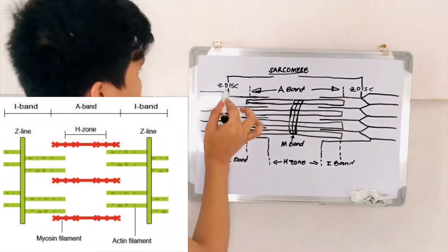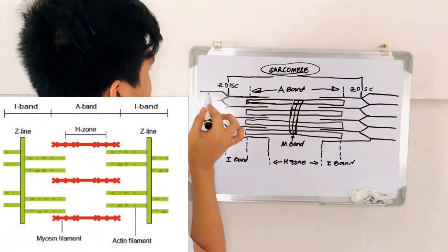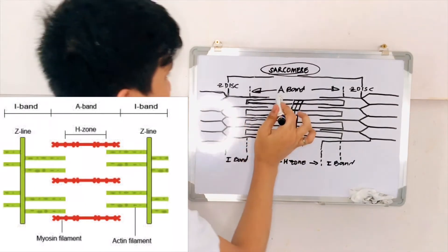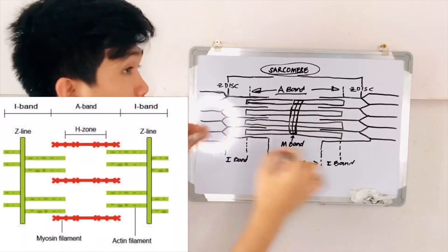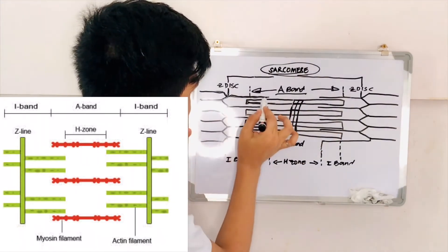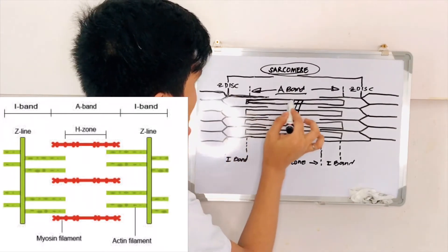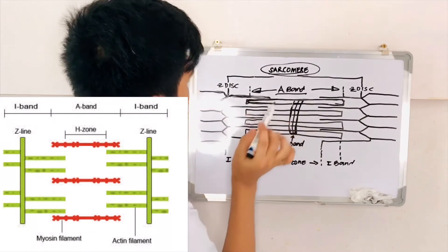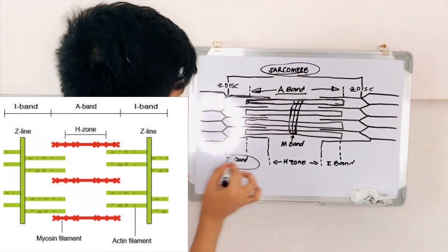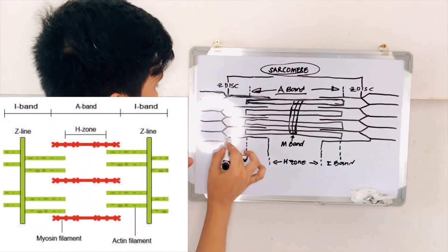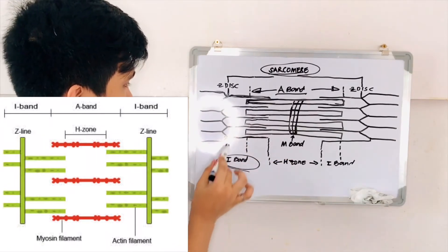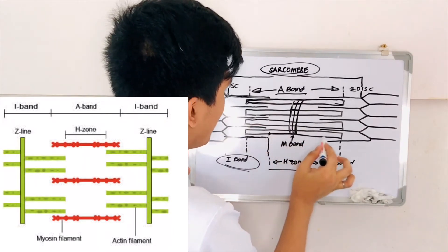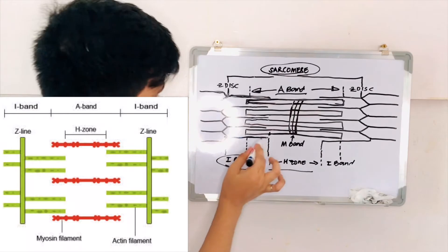When we say Z-disc, it's the boundaries of the sarcomere that links together all the actin filaments. When we say A-band, it is the overlapping of the thin filaments or the actin and the thick filament or the myosin. As you can see, there is an overlapping. While when we say I-band, it only contains the thin myofilament of proteins or what we call the actin. While the H-zone only contains the myosin filament or the thick filament of protein without the overlap.